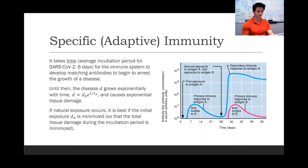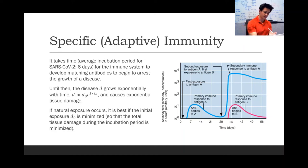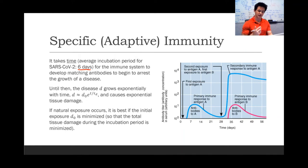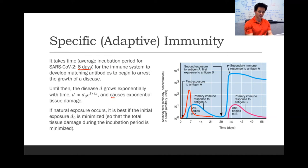That's what immunity is. It takes time for the body to generate antibodies that match the antigen of a specific disease. In the case of SARS-CoV-2, that takes about six days. In the meantime, the disease grows exponentially inside the body before being killed off, causing exponential tissue damage proportional to how long it takes the body to respond.